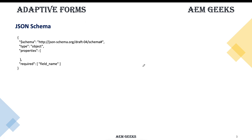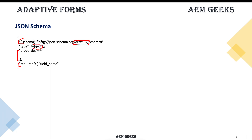Let me explain the basics of that schema. These are the minimum fields you must have to create any adaptive form. One is the schema — this is the most important. This is actually the schema against which your schema will be validated. These are generic ones; if you have something specific, you can add your specific schema here, but as we are writing normal fields, nothing specific. This is mandatory. Now the type — if you are creating a form, the type must be object. If you're creating a field, the type might be as per your field properties. And you must be aware that required can be used only with object, not with any other types.